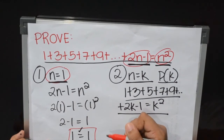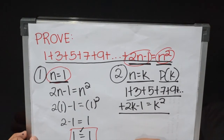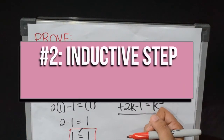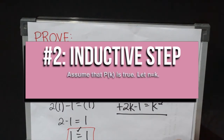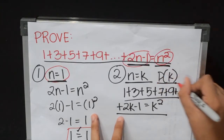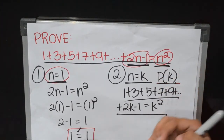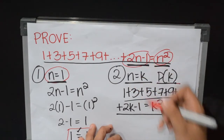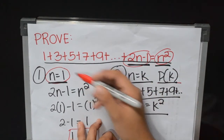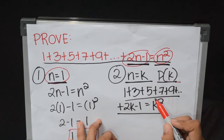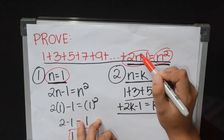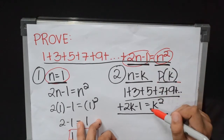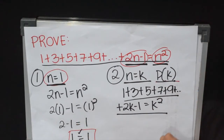Since the premise satisfied the first step, we shall now proceed to the second step or the inductive step. The inductive step is where we make the induction hypothesis and assume that P(k) is true. By that, we need to substitute n by k in the equation. So the equation becomes 1 plus 3 plus 5 plus 7 plus 9 plus ... plus (2k minus 1) equals k squared.